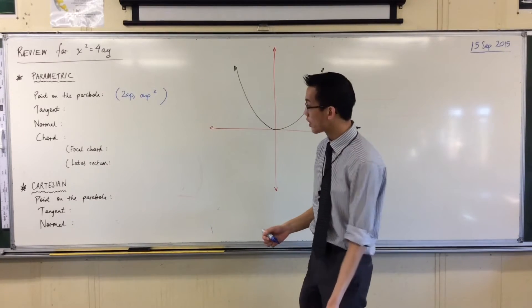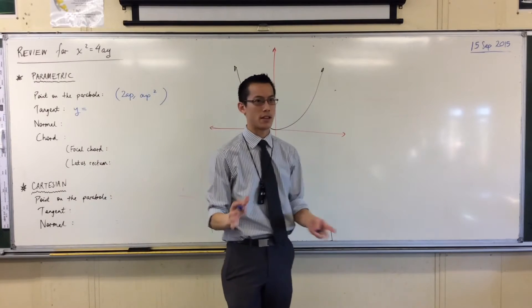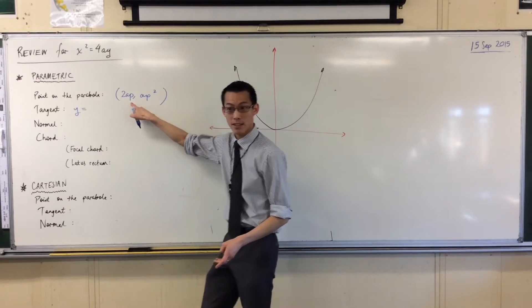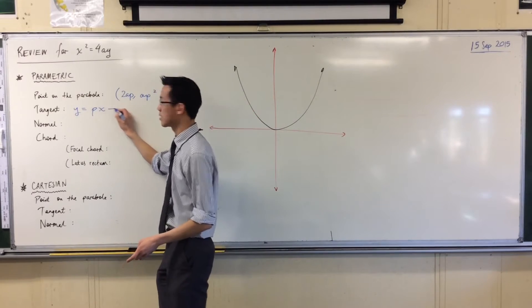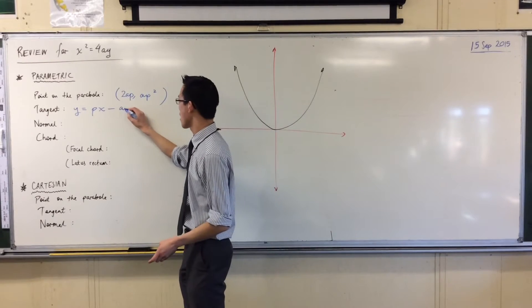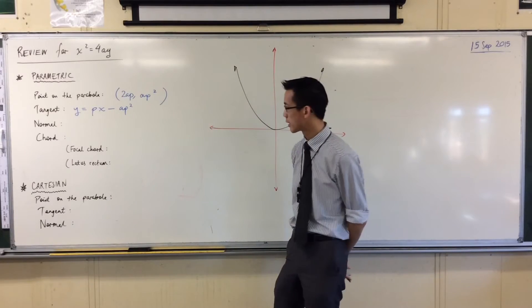So when you've got a tangent, I wonder if you've learnt this one yet, y equals, this is one of the simplest results. Because the tangent, it's going to have that same gradient, so you go px, and then you take away ap squared. So there are a lot of similarities for this, from what you already know, just by defining a point.